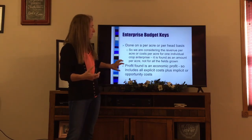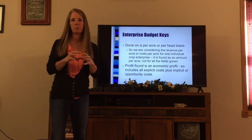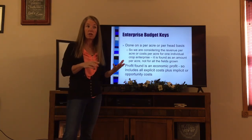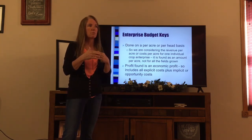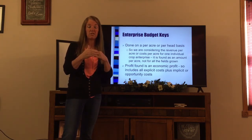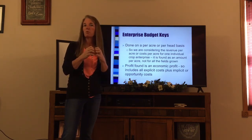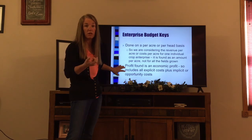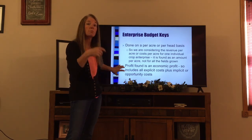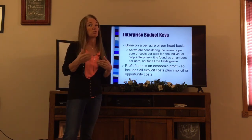The profit we find with this enterprise budget is going to be an economic profit. We talked about opportunity costs — those implicit types of costs we don't pay cash for, such as the value of our land even if it's paid off, or the value of our own labor even if we aren't paying ourselves. We want to include those costs so we can find our economic profit — meaning can we cover everything including cash costs plus all the opportunity costs for ourselves, our land, and our management.